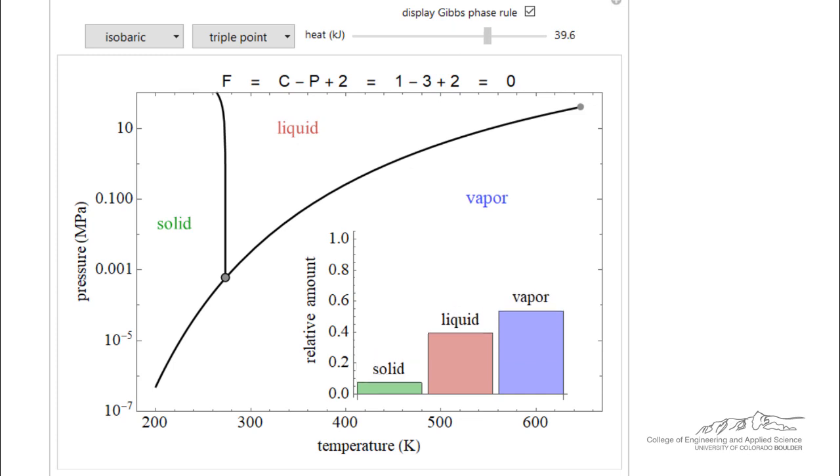Once we have all vapor, by continuing to add energy, heating it up, here we have all vapor. Now we've left the triple point. We have energy, we're just going to heat up the vapor phase.